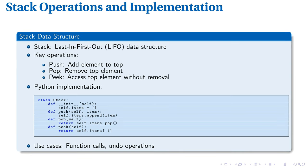Let's examine stack operations closely. Push, pop, and peek form the core methods of a stack. Push adds an element to the top, pop removes the topmost element, and peek accesses the top without removal. The Python implementation shown uses a list as the underlying structure. The push method appends to this list, pop removes and returns the last element, and peek returns the last element without removing it. This demonstrates how abstract data structures can be built using Python's built-in types.